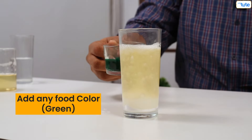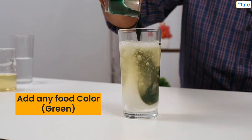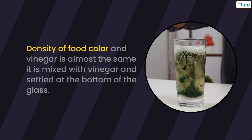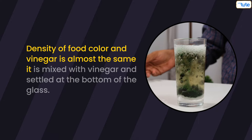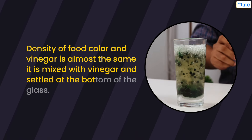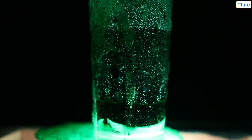Now add your favorite color — here we are adding green. Since the density of food color and vinegar is almost the same, the food color mixes with the vinegar and settles at the bottom of the glass, and the reaction starts inside the glass.